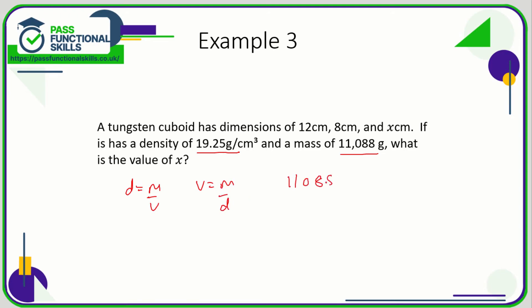The mass is 11,088 and the density is 19.25, and 11,088 divided by 19.25 comes to 576. So the volume is 576 cubic centimeters.